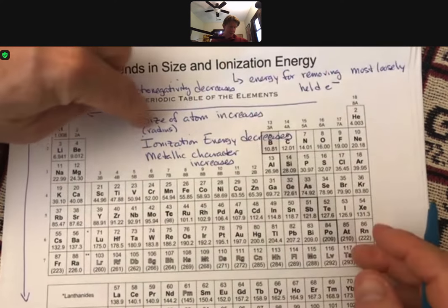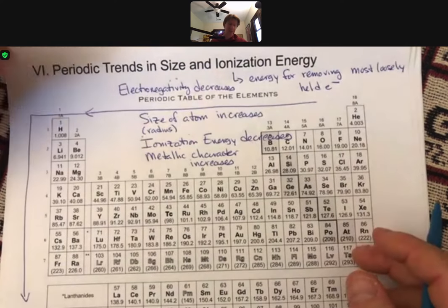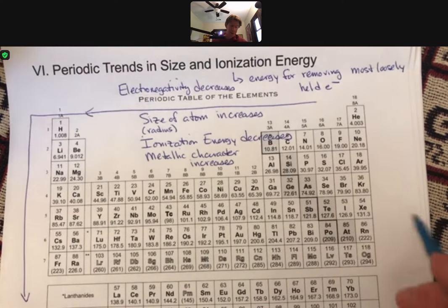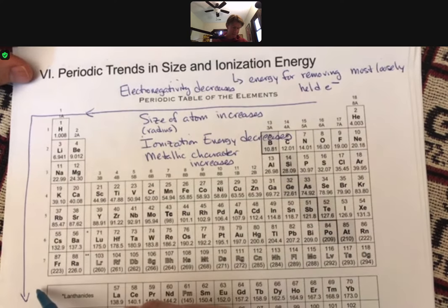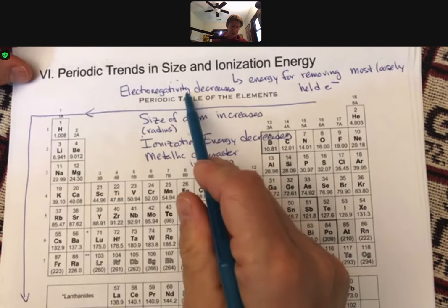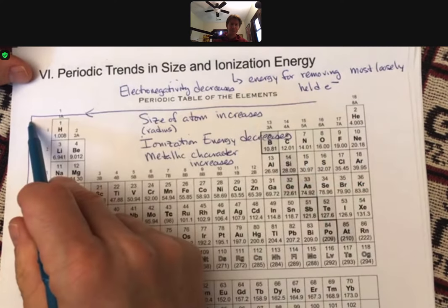So size of atom increases, everything else... actually it's two and two. So size of atom and metallic character increase, ionization energy and electronegativity decrease.